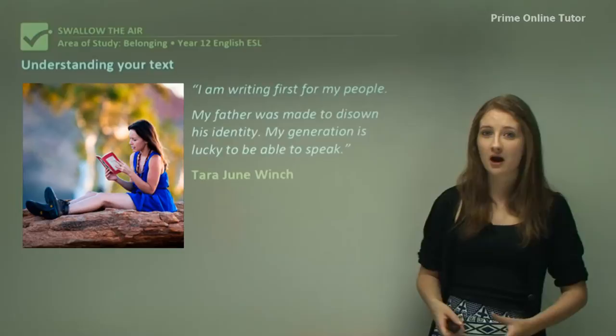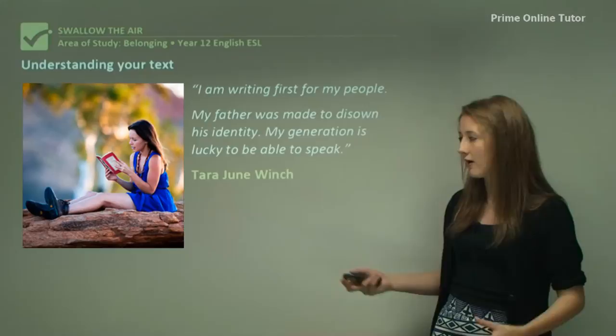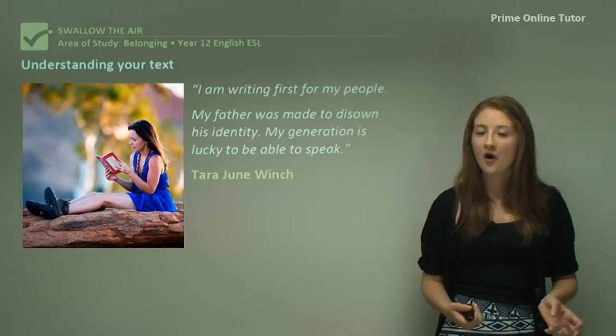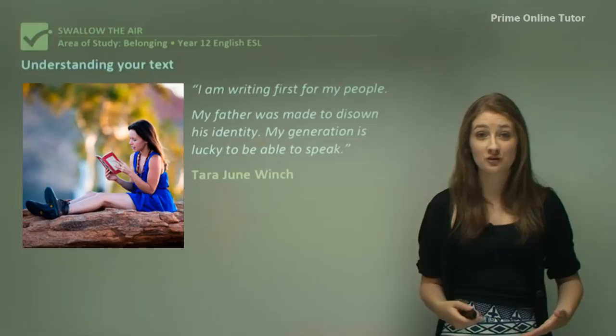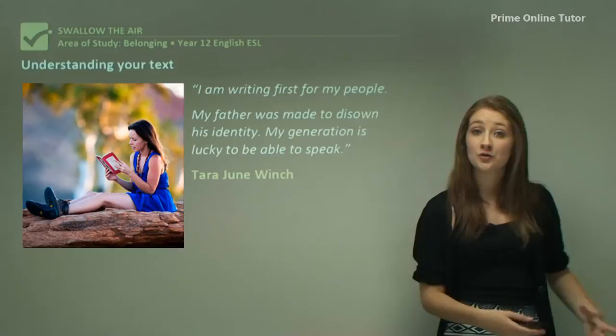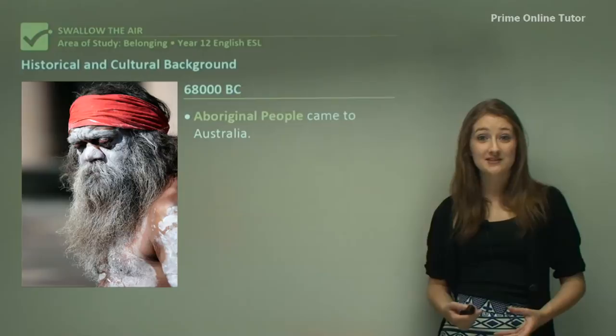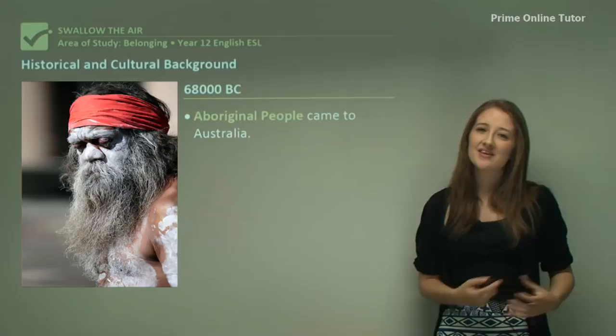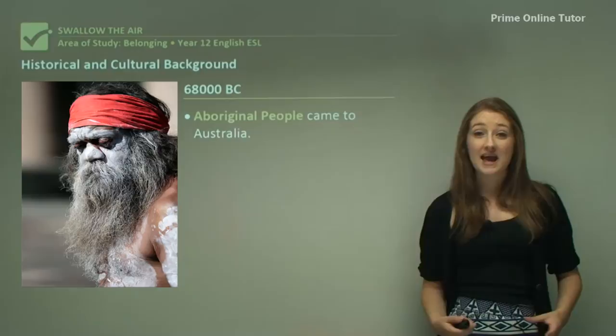Basically, this quote tells us that so much of this work is based on Tara June Winch's own experience — the relationship between Tara and May is quite a similar experience. She realises, as an Aboriginal of these current generations, that she should really take a stand, spread the history of her people, and not have this Aboriginality oppressed out of her — as was seen in her father's generation or in May's uncle's generation in the novel. Let's take a look at some historical and cultural background about Aboriginal people in Australia and how we can apply that to this novel.